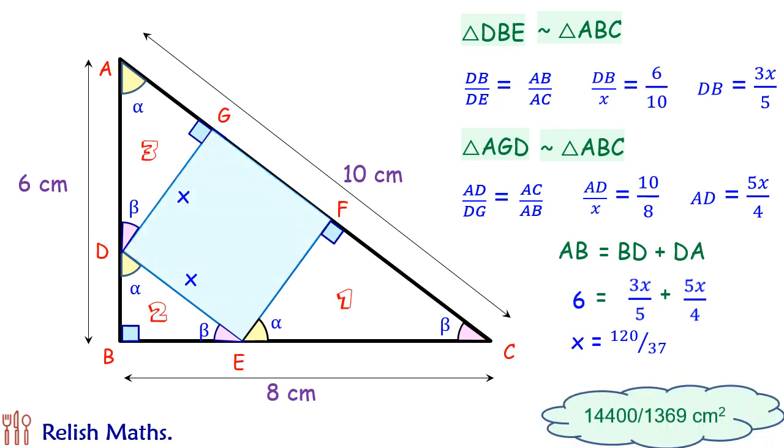So we can find the area of square, that is x square, and solving we get 14400 upon 1369 centimeter square. I hope you enjoyed the solution. Keep watching.